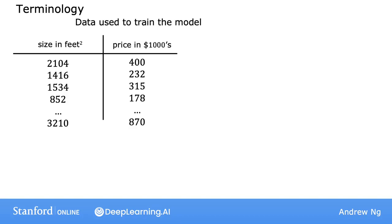The dataset that you just saw and that is used to train the model is called a training set. Note that your client's house is not in this dataset because it's not yet sold, so no one knows what the price is. So to predict the price of your client's house, you first train your model to learn from the training set, and that model can then predict your client's house's price.